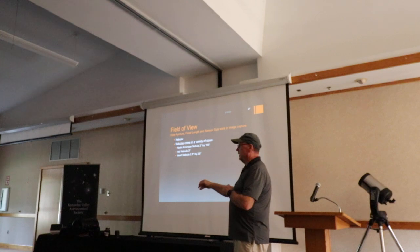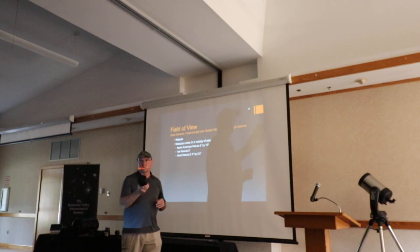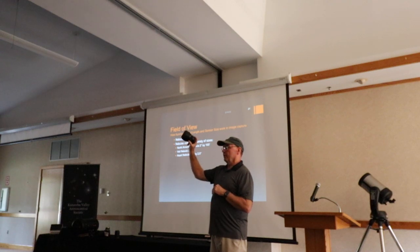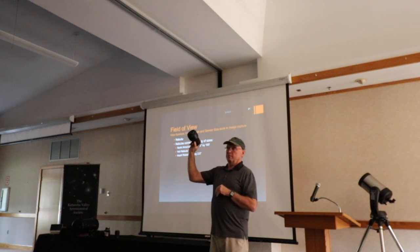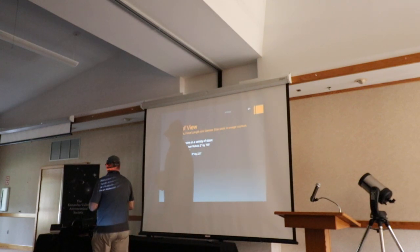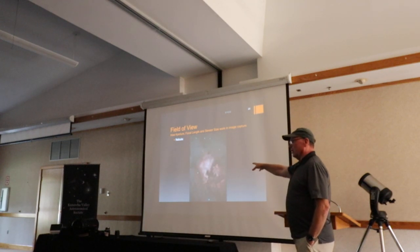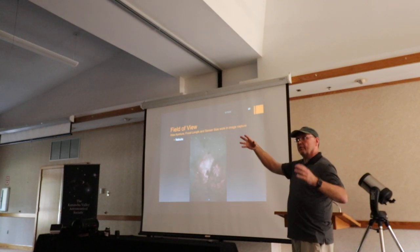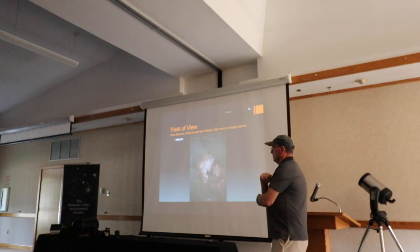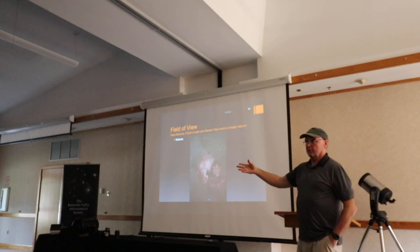I also have a Sigma 85 millimeter f/1.4 — an excellent lens for wide field astrophotography. Here's the North American Nebula, taken with the 180 millimeter Nikon lens. You don't have to have a telescope to take these nebula pictures — they're roughly big in the sky. The 180 millimeter at f/2.8 is a fast lens, so it captures a lot of photons pretty quickly.